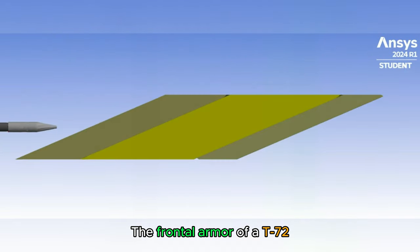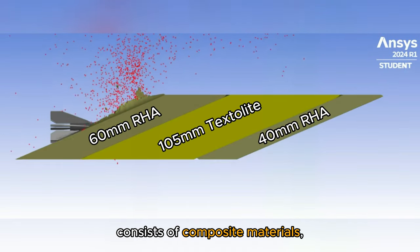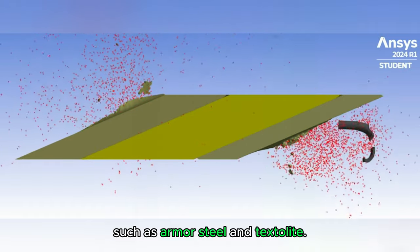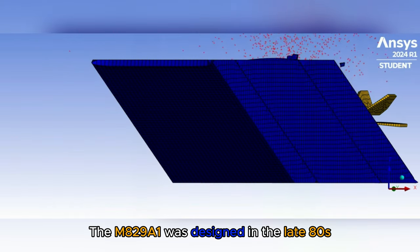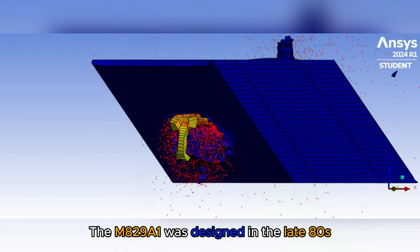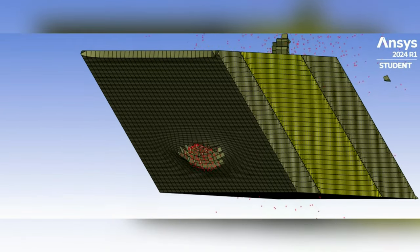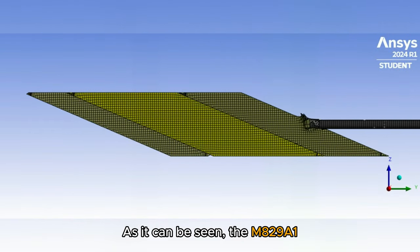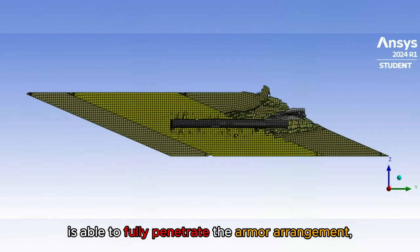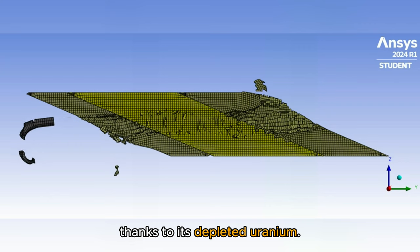The frontal armor of a T-72 consists of composite materials, such as armor steel and textilite. The M829A1 was designed in the late 80s as a response to improved Soviet armor. As it can be seen, the M829A1 is able to fully penetrate the armor arrangement thanks to its depleted uranium.